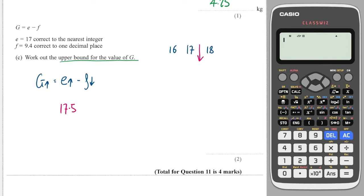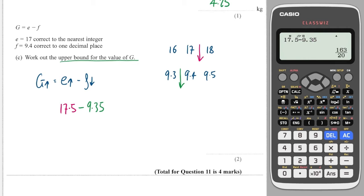And then if we look at F — F is 9.4 to 1 decimal place, so the next number up I could use would be 9.5, and the one down would be 9.3. Because we're looking for the lower bound of F, I go between these two, and that will be 9.35. So I go to my calculator, I do 17.5 minus 9.35, and I get an answer of 8.15.